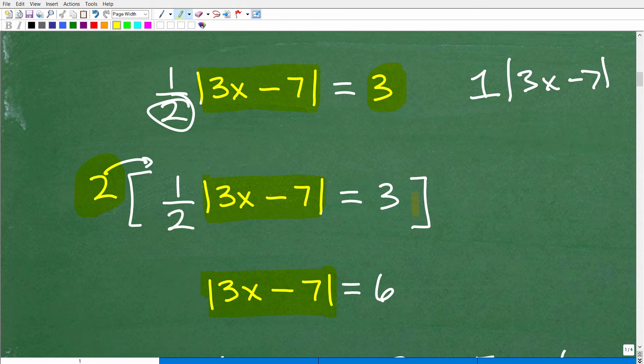So now I have my absolute value all by itself on the left-hand side. But I also have to multiply this 2 by the right-hand side. So 2 times 3 is 6.